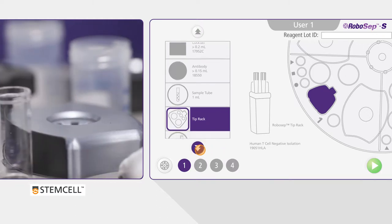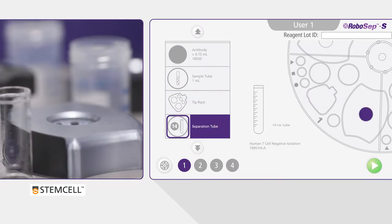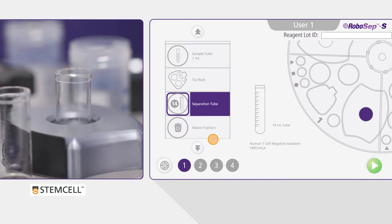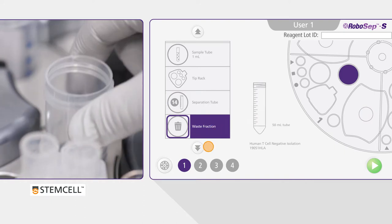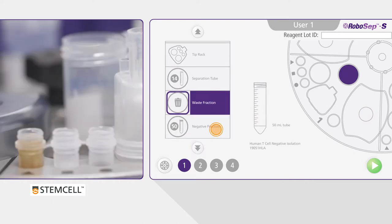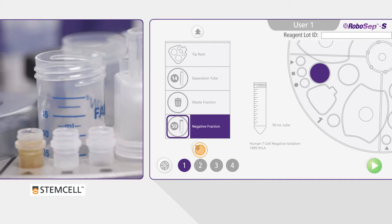Keep following the on-screen prompts and load the separation tube into the magnet. Ensure it's fully inserted and the bottom is touching the carousel. Load the waste fraction 50 milliliter tube. Load the 50 milliliter negative fraction tube.